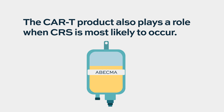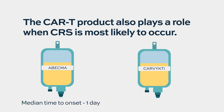We're increasingly realizing that timing also depends on the product. For idecabtagene viclusil (ide-cel, Abecma), the kinetics of CRS tend to be faster — most patients get CRS within the first day of infusion, generally within the first week in the vast majority of patients. But it's fast on, fast off — most patients' fevers are gone shortly thereafter. For ciltacabtagene autoleucel (cilta-cel, Carvykti), it tends to be slower kinetics because of how the CAR-T cell is designed. The CAR-T cells take longer to turn on, longer to secrete the cytokines that produce CRS — so on average, CRS first manifests around five to seven days after infusion.